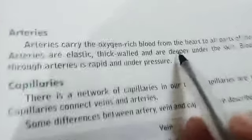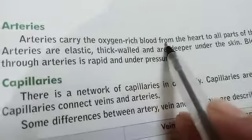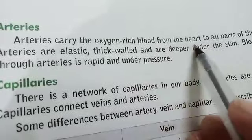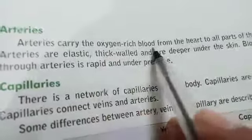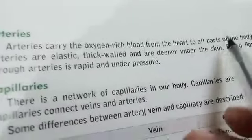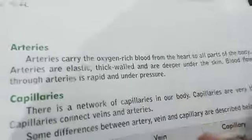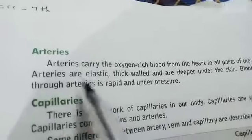Arteries carry oxygen-rich blood. What is oxygen-rich blood? It is blood in which oxygen is mixed. That blood is present in the heart. Arteries carry oxygen-rich blood from the heart to all parts of the body.